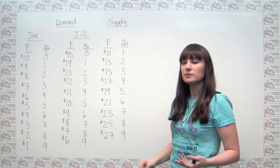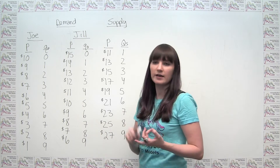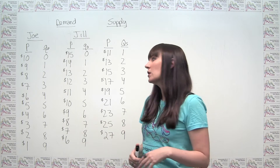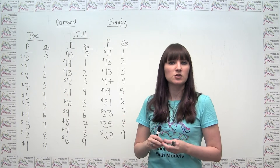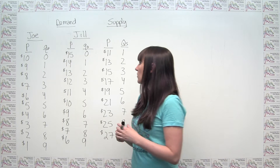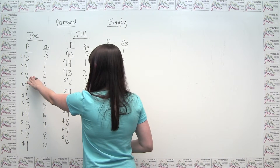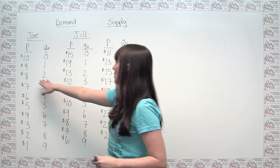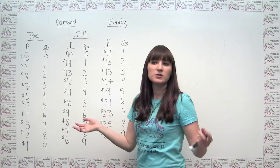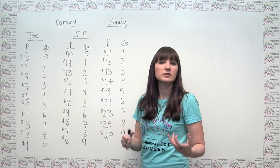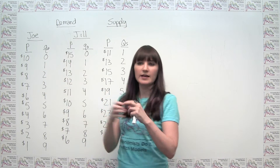We could say the same thing for Jill. Now, normally when we have private goods — with high excludability, meaning they can be restricted to paying customers, and high rivalry in consumption, meaning one person consuming a unit prevents another from consuming it — we would do horizontal addition. At a price of $8, Joe demands two acres and Jill demands seven acres, so between the two of them they demand nine acres. That's what we'd normally do to go from individual demands to market demand.